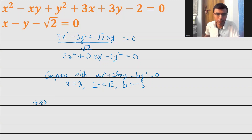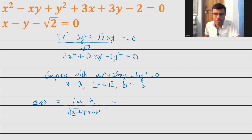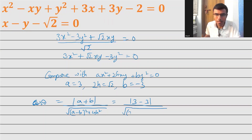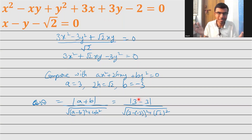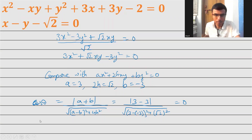Now I'm going to find the angle between the lines. Cos theta equals mod of (a plus b) divided by root of (a minus b) whole squared plus 4h squared. Substituting: a plus b equals 3 plus (minus 3) equals 0. So cos theta equals 0 divided by the denominator, which is just 0. Cos theta equals 0.